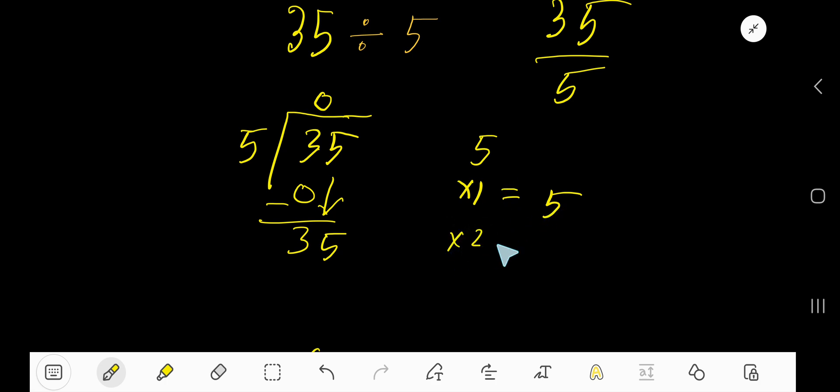5 times 1, 5. 5 times 2, just add 5, 10. Then 5 times 3, just add 5, 15.